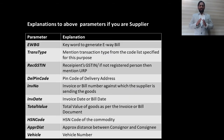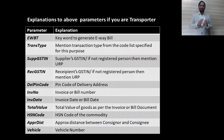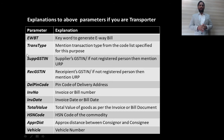When you are a transporter, the syntax stays almost the same. Only instead of EWBG, it becomes EWBT. And along with the recipient's GSTN number, you also have to supply the supplier's GSTN number, and if that is not available, then URP.